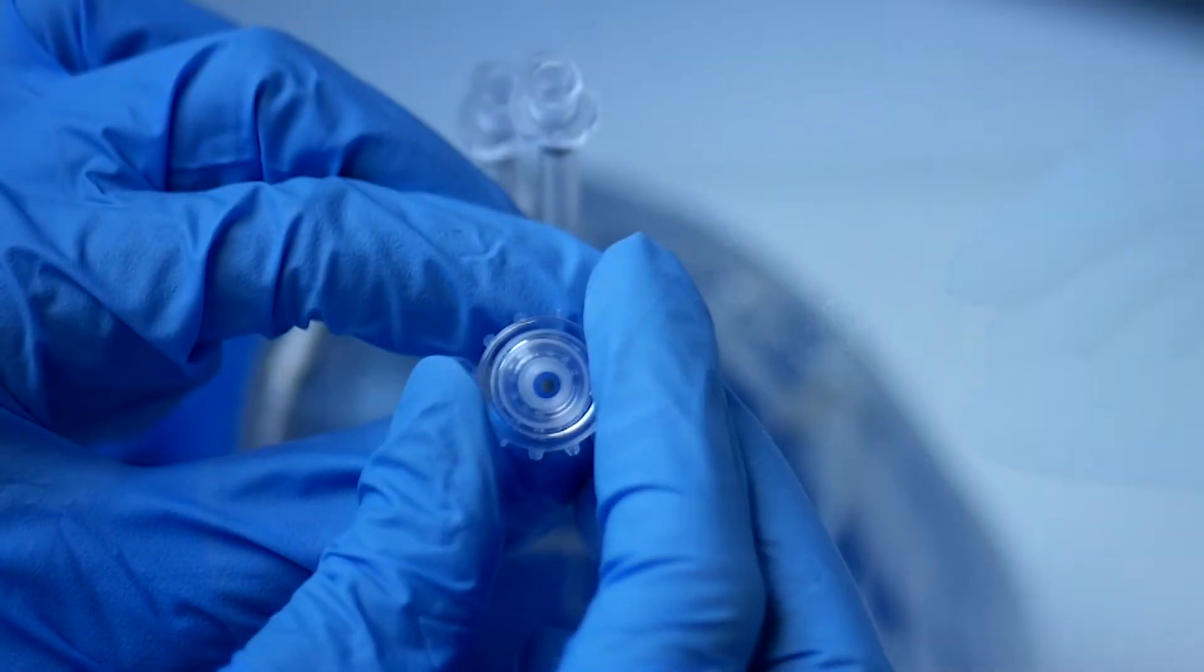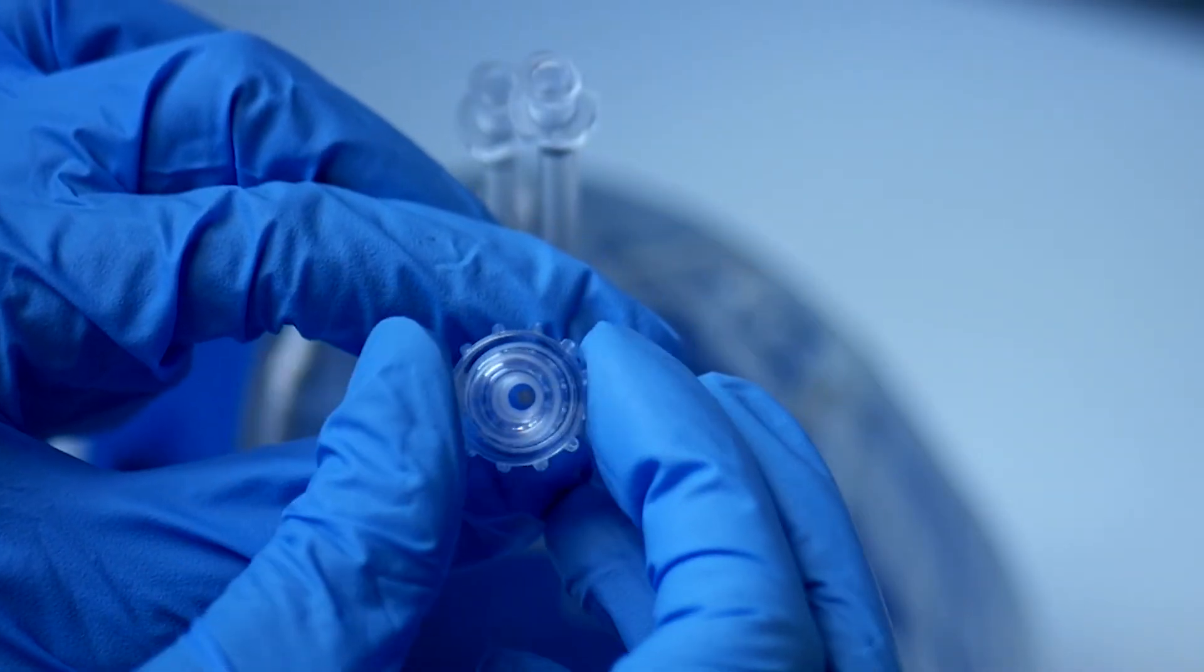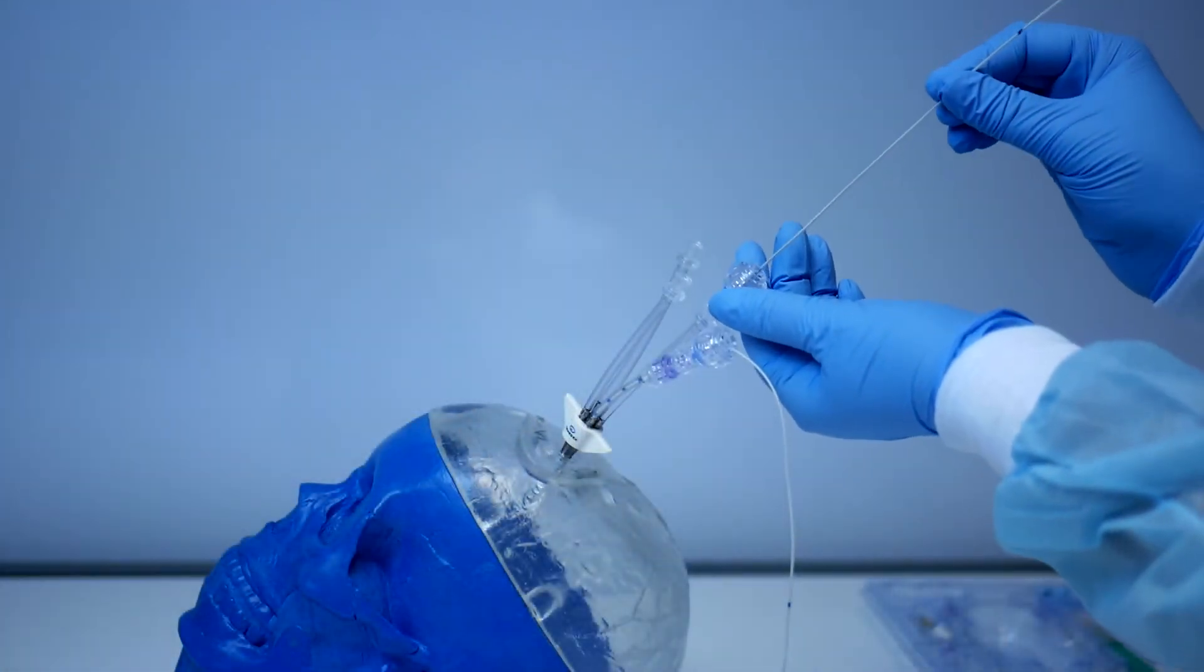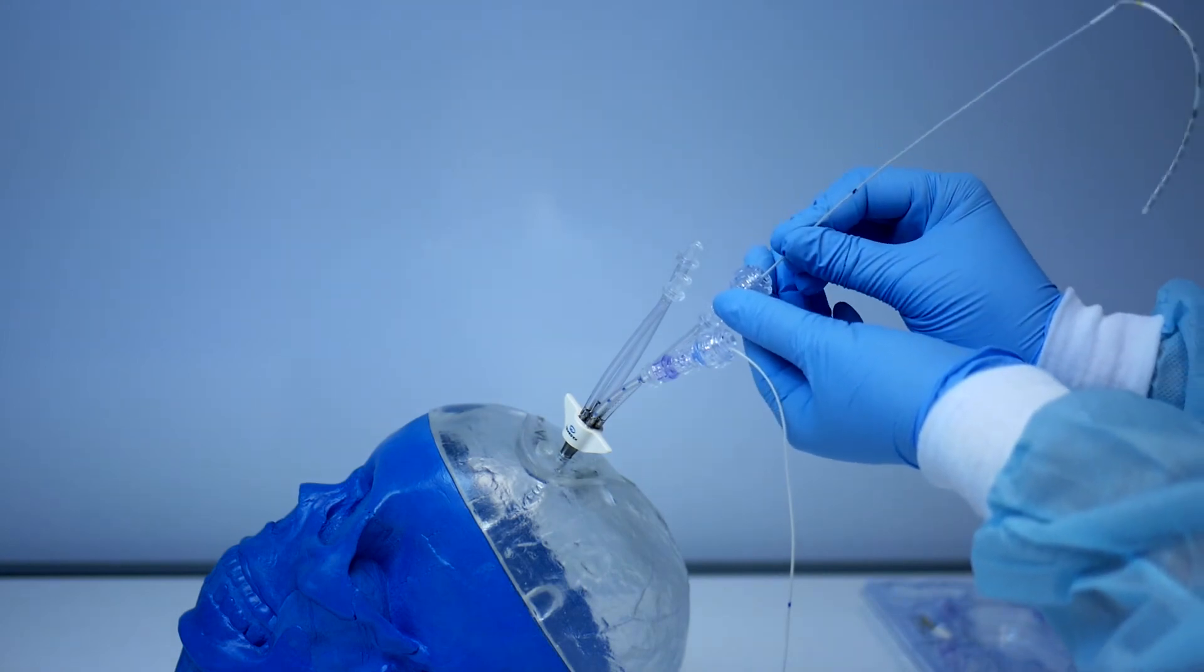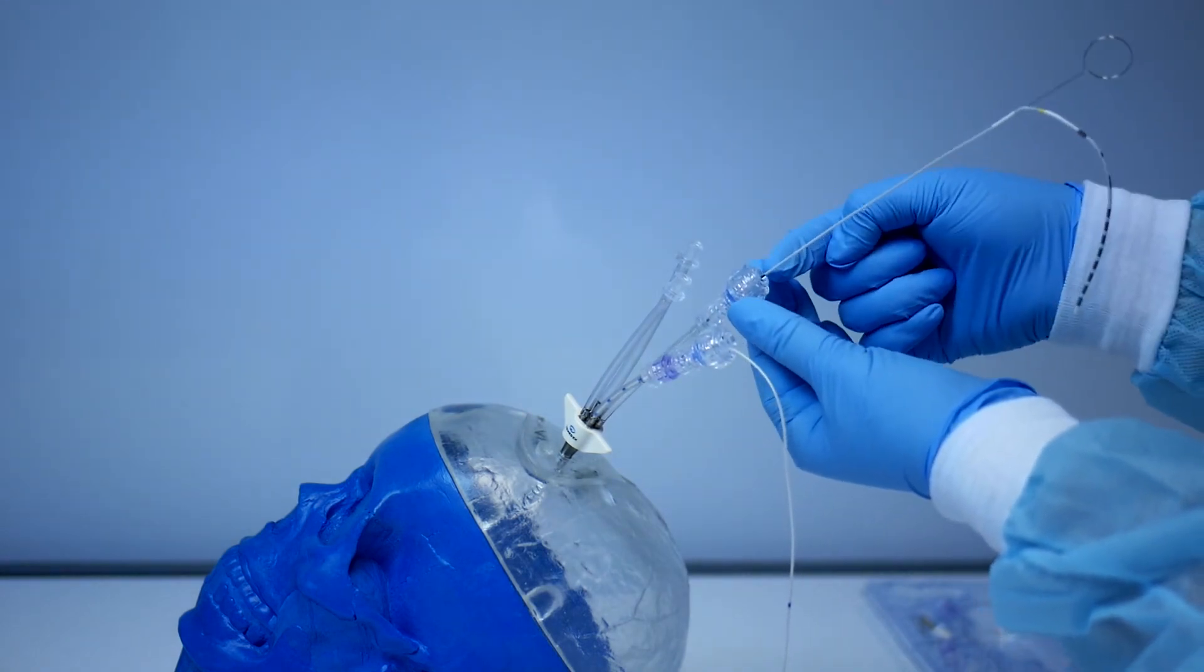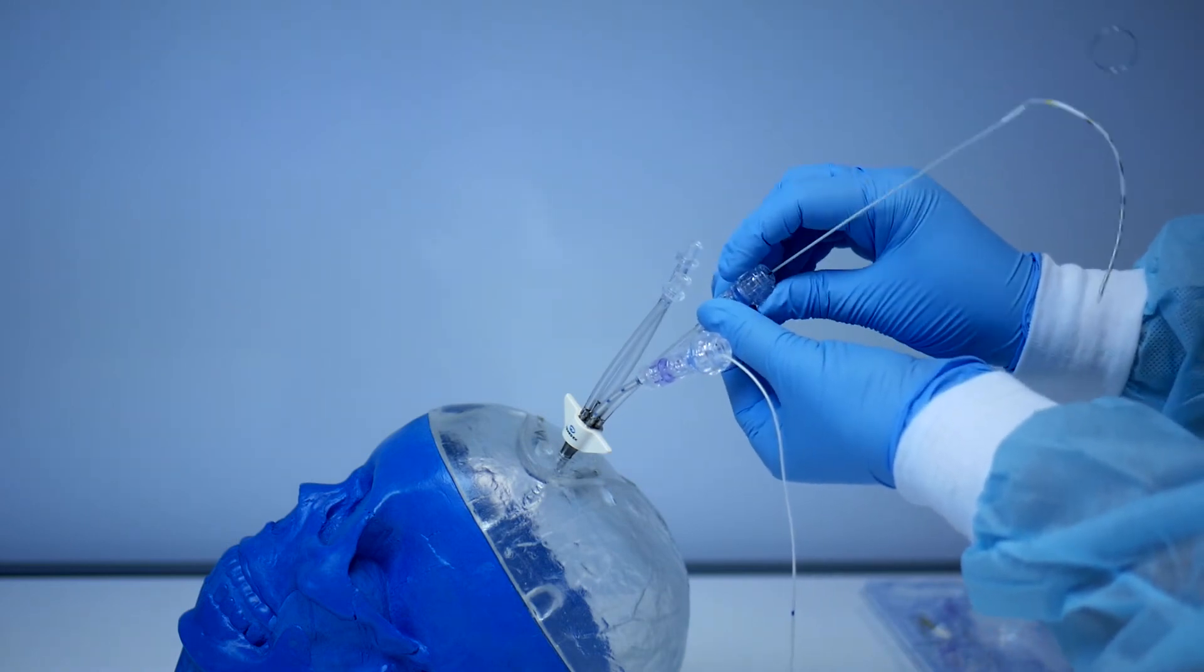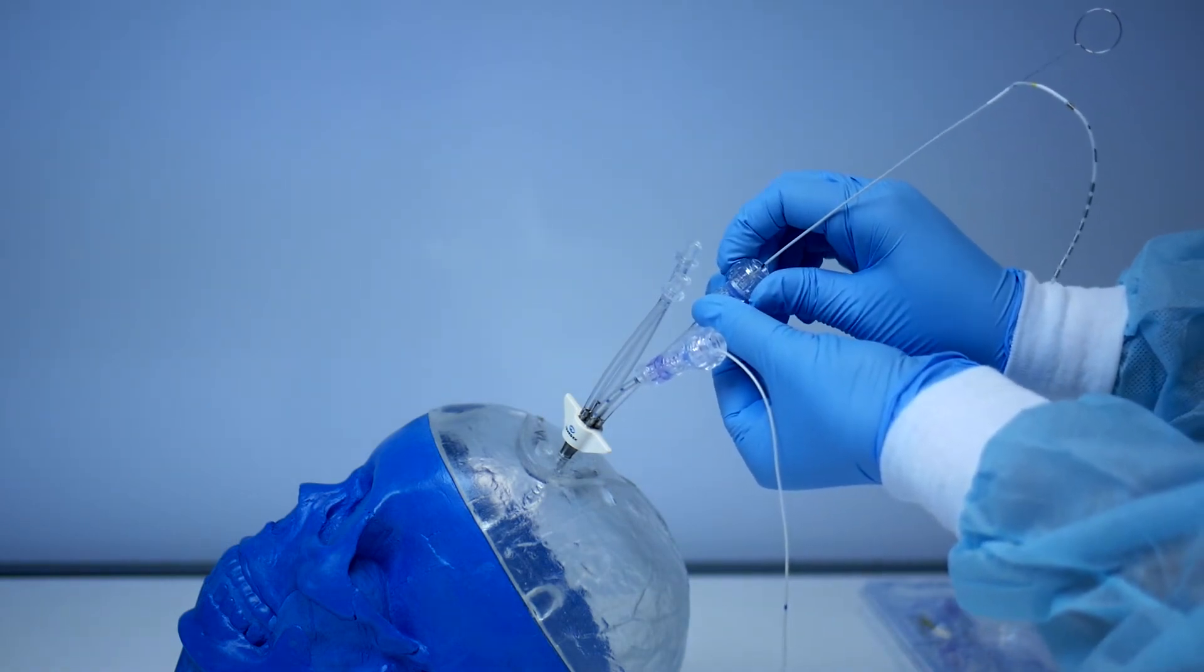Ensure the compression fitting is open. Insert the depth electrode probe through the compression fitting so that the depth marker is located at the top of the compression fitting. Turn clockwise to secure and remove the inner wire stilette.